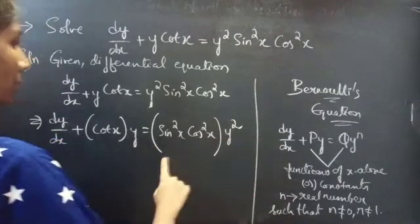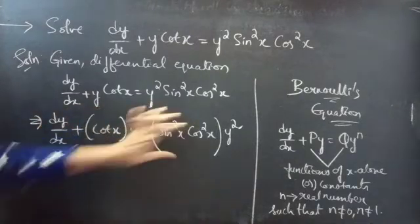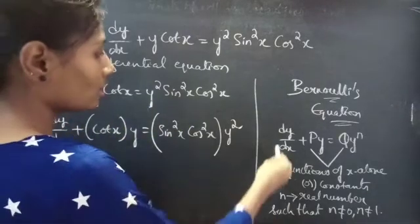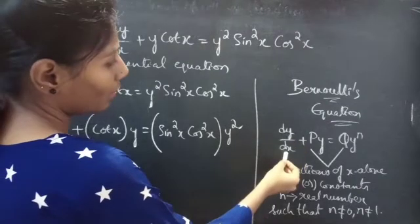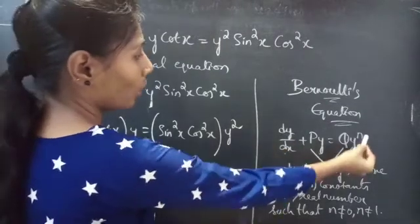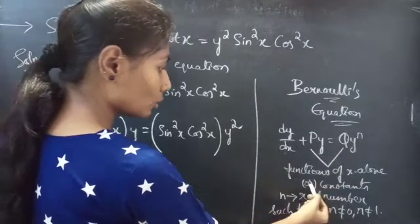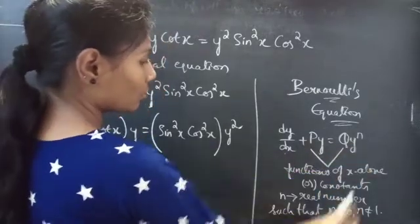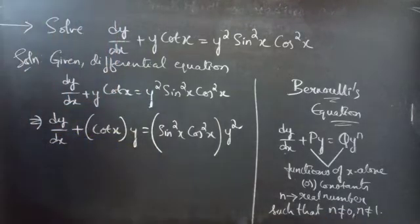By comparing these two, we will get p, q, and n. Bernoulli's equation is of the form dy/dx plus p·y equals q·y^n, where p and q are either functions of x alone or constants, and n is a real number such that n ≠ 0 and n ≠ 1.